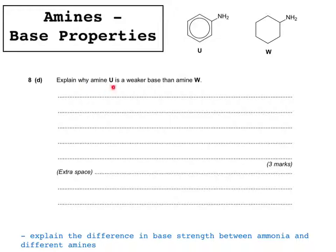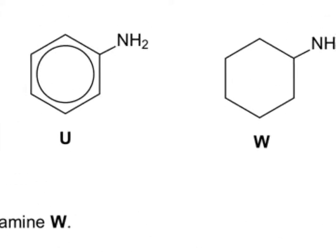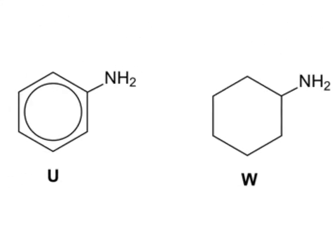They're asking why amine U is a weaker base than amine W. Looking more closely, amine U is a phenylamine — it has a benzene ring attached to an amine — and amine W is a primary amine. We've already established that phenylamine is the weakest base, and a primary amine is a pretty strong base because of the positive inductive effect from its alkyl group. But we need to think about what they want to see in the mark scheme.